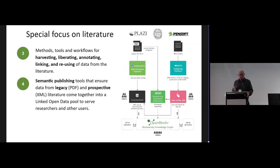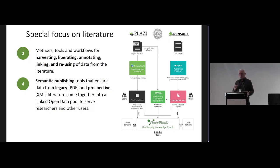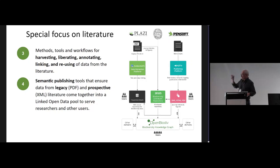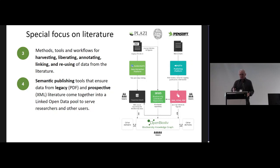BiCIKL has a very special focus on the literature and develops two main workflows. The first, mostly developed by Plazi, is a workflow that extracts data from legacy literature — from PDFs — and turns it into FAIR data placed in public repositories. The second workflow is about publishing: to avoid that huge extraction effort, we publish in such a way that data are available in XML or JSON and go straight to aggregators on the day of publication, saving the enormous effort of harvesting data from PDFs.